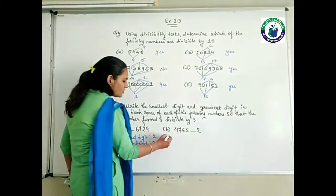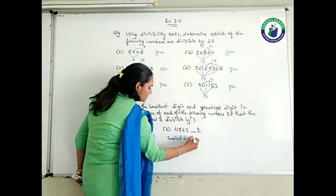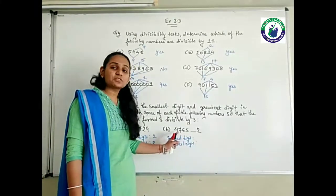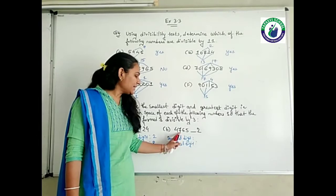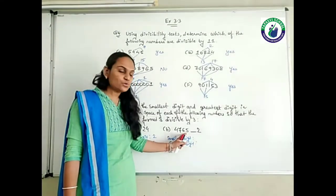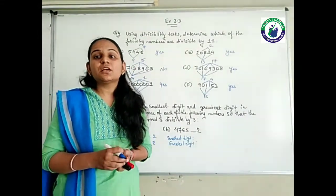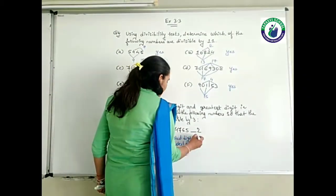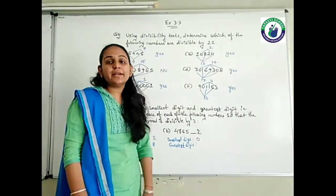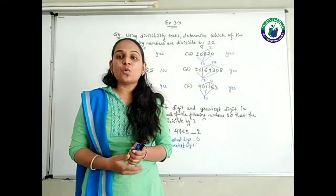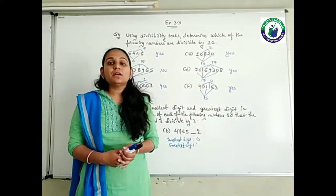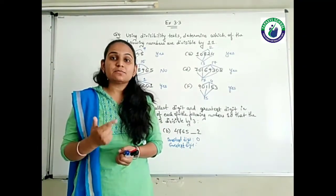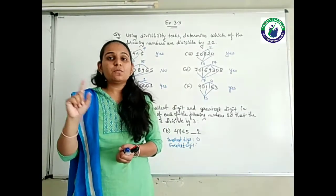Similarly for the second number, we check the sum of digits: 4 plus 7 is 11, plus 6 is 17, plus 5 is 22, plus 2 is 24. Since 24 itself is divisible by 3, the smallest digit should be 0. For the greatest digit: 24 plus 1 is 25 — not divisible. 24 plus 2 is 26 — not divisible. 24 plus 3 is 27 — divisible, but not the greatest. 24 plus 4 is 28 — not divisible. 24 plus 5 is 29 — not divisible. 24 plus 6 is 30 — divisible, but not greatest.